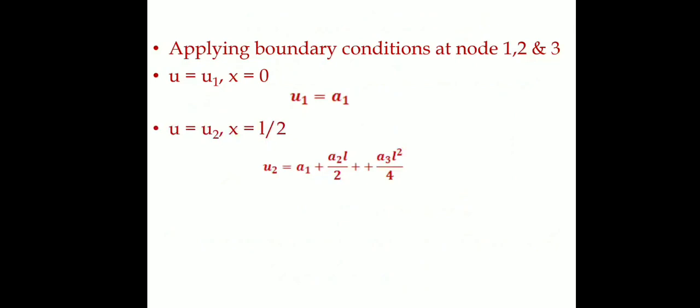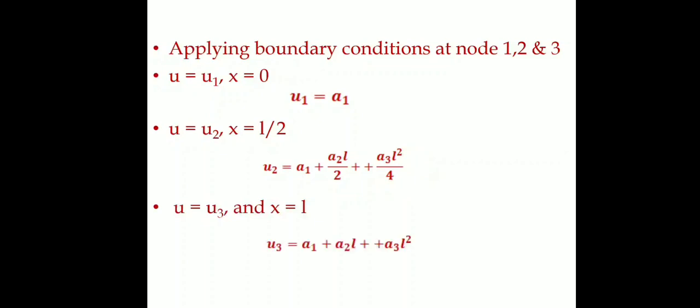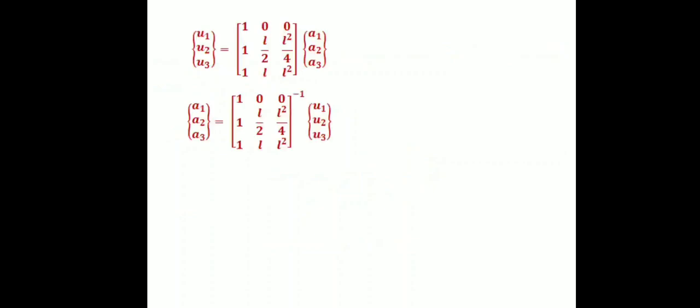Substituting all three boundary conditions: u2 = a1 + a2·(L/2) + a3·(L²/4), and u3 = a1 + a2·L + a3·L². In matrix form: [u1, u2, u3]ᵀ = [1, 0, 0; 1, L/2, L²/4; 1, L, L²] · [a1, a2, a3]ᵀ.